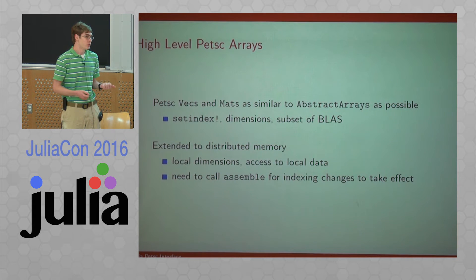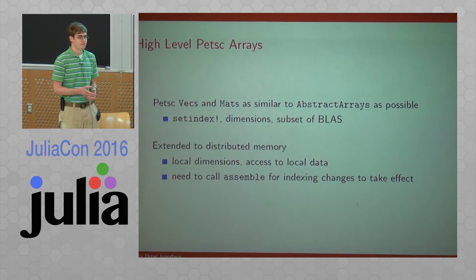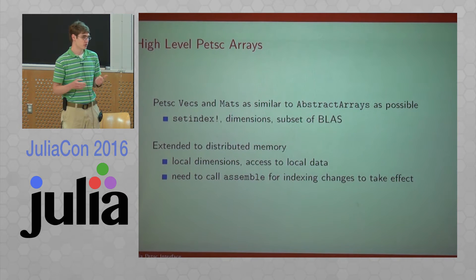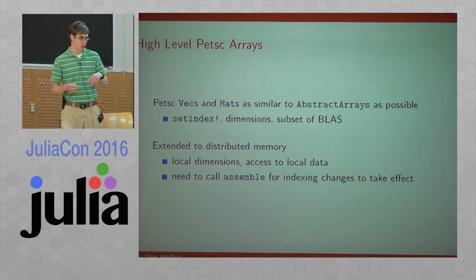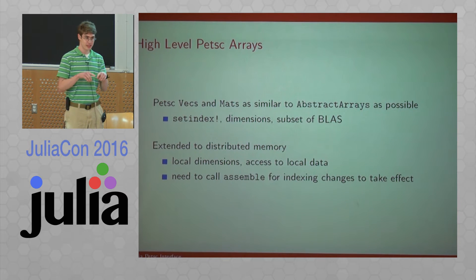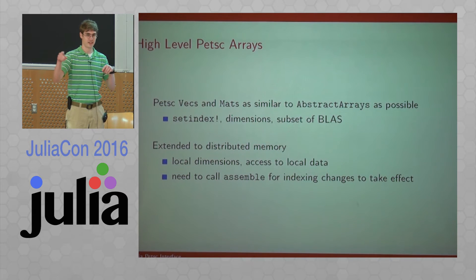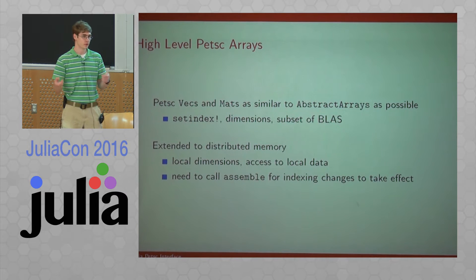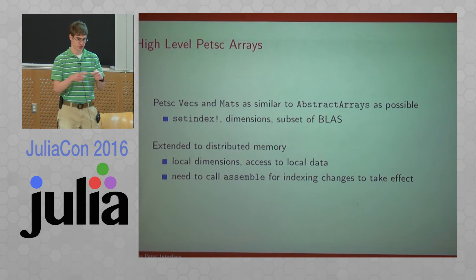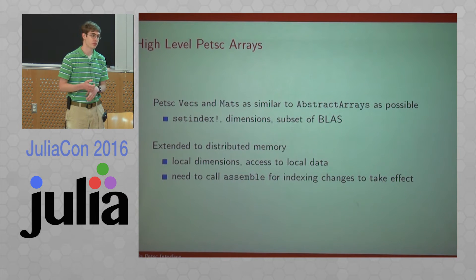The big way these differ from abstract arrays is the need to assemble. Indexing uses global indices, so it's perfectly valid for one process to insert a value onto a part of an array that lives on another process. But for efficiency reasons, you can't just send the data over immediately and wait for it to finish — doing that repeatedly would be far too slow.